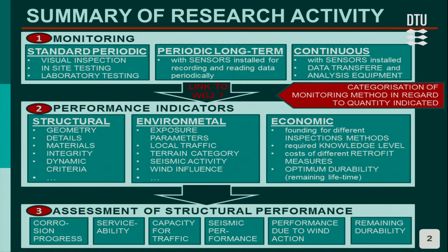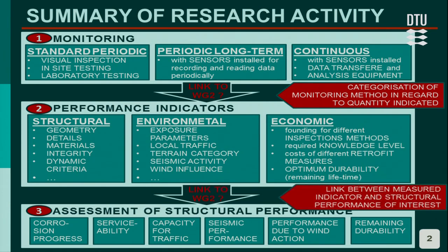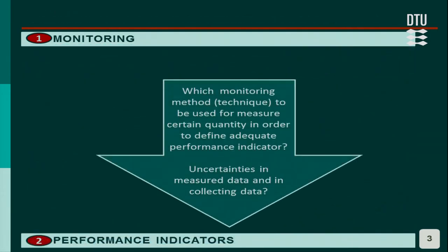Between each step we can find the link to the objective of working group 2. Between step 1 and step 2, we have to define which monitoring method is to be used to measure a certain quantity in order to define a performance indicator, and uncertainties in measuring and collecting data may appear.